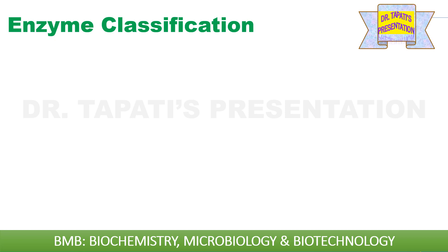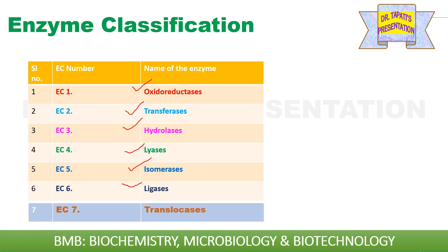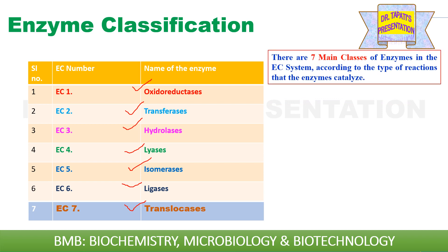Initially, six classes of enzymes were present in the EC system: EC1 oxidoreductases, EC2 transferases, EC3 hydrolases, EC4 lyases, EC5 isomerases, and EC6 ligases. In August 2018, the International Union of Biochemistry and Molecular Biology classified enzymes under a new seventh class — translocases, that is EC7. So there are now seven main classes of enzymes in the EC system.